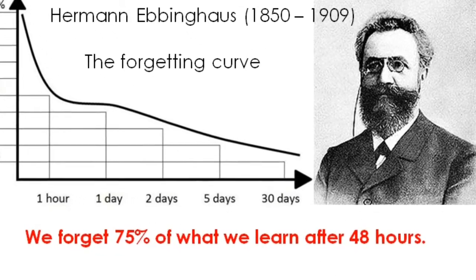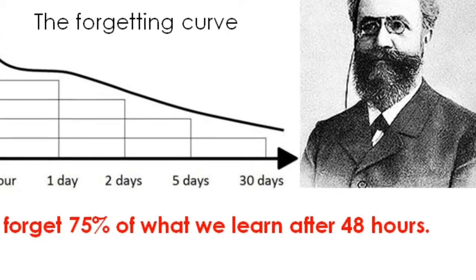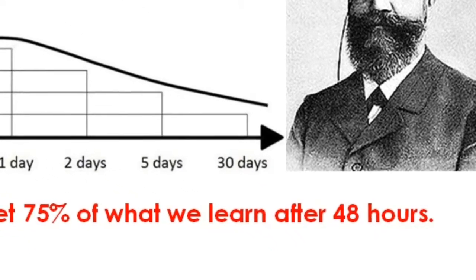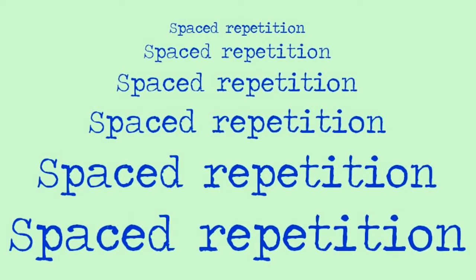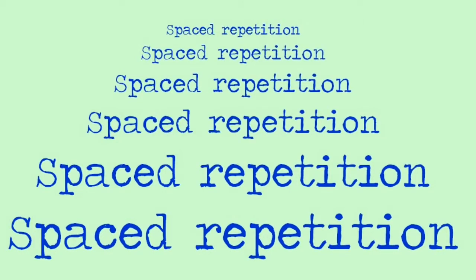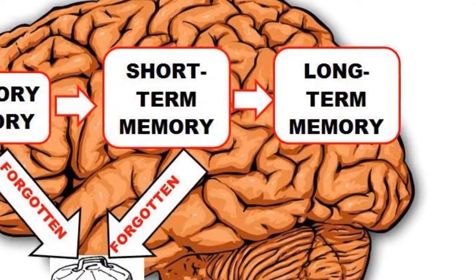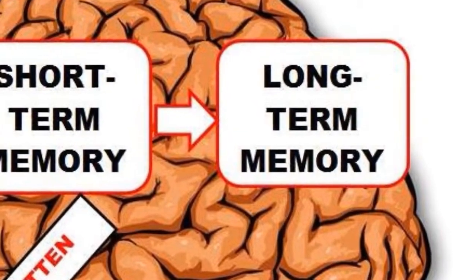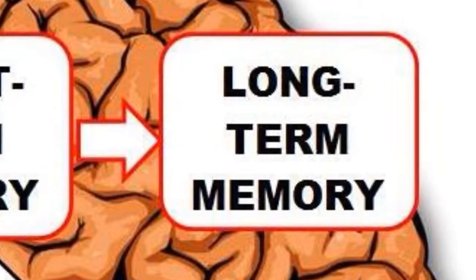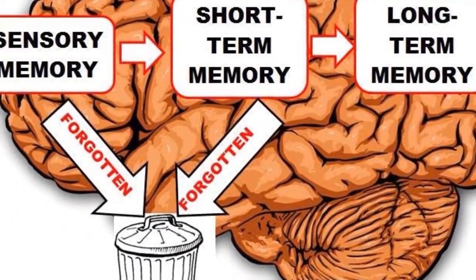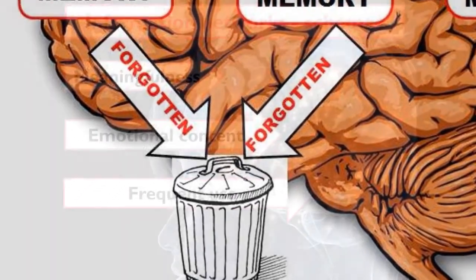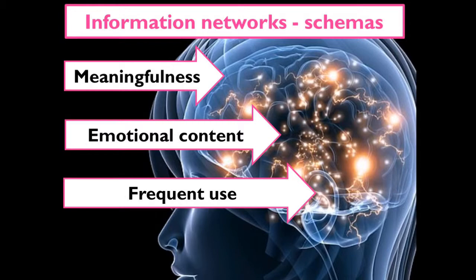The next thing to consider is that we actually forget about 75% of what we learn after just 48 hours, so we need to think about how we can combat the brain's natural tendency to forget. Repeating things at spaced intervals will help the conscious learning process, as will writing things down. But for things to go in at a deeper level, information has to be transferred from the short-term memory, where it will be forgotten, to the long-term memory, where it will be remembered. The way this happens is through organising information in neural networks known as schemas, and in this process the meaningfulness or emotional content of an item is important. When there is no motivation to remember something new, it just disappears from our short-term memory and we forget it. We also forget things we think we've already learned when they don't have enough connections in our memory networks and when they're not used often enough.